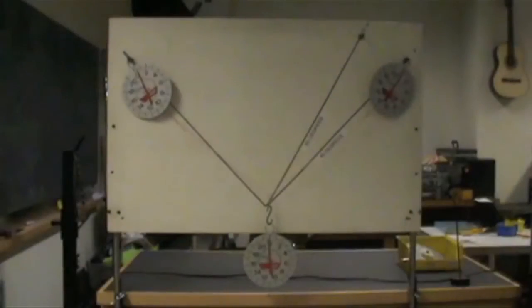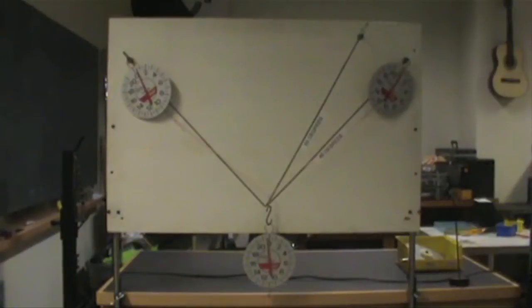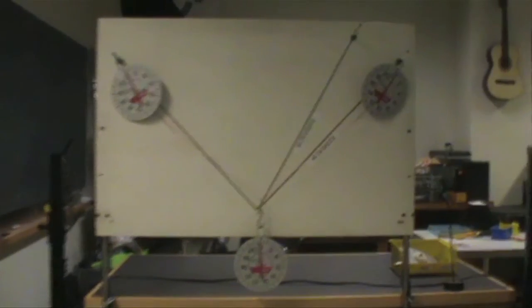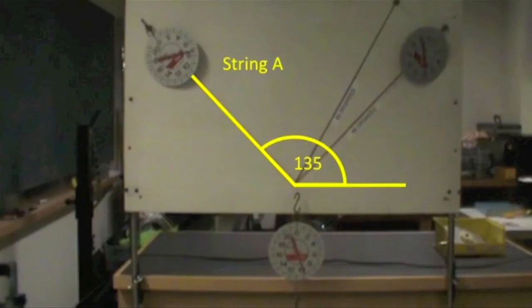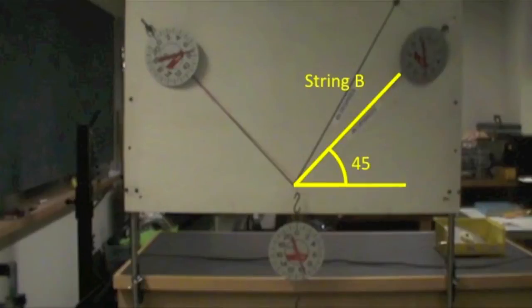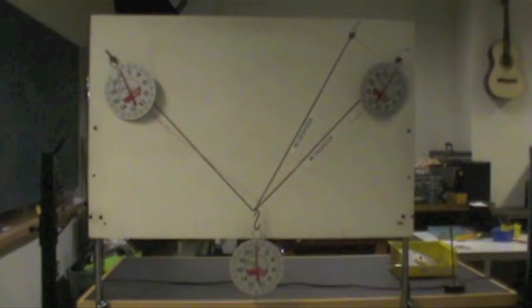In this next segment, we'll see a demonstration of how forces do indeed add like vectors. Here you see three Newton scales connected by strings. We'll call the two strings on top, string A and string B. String A is 135 degrees off of horizontal. String B is 45 degrees off of horizontal. The scales read out the magnitude of the tension on each string.